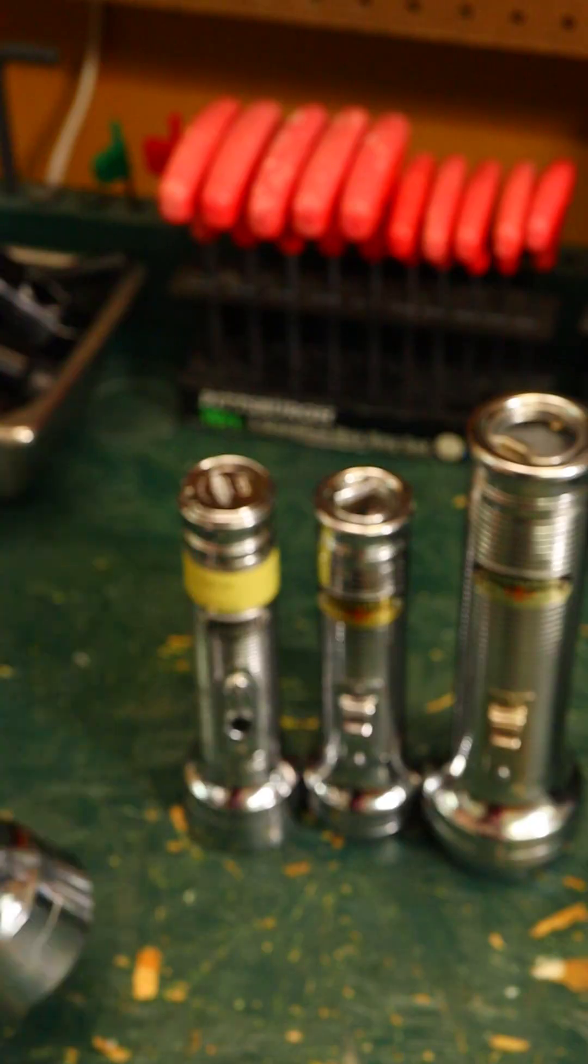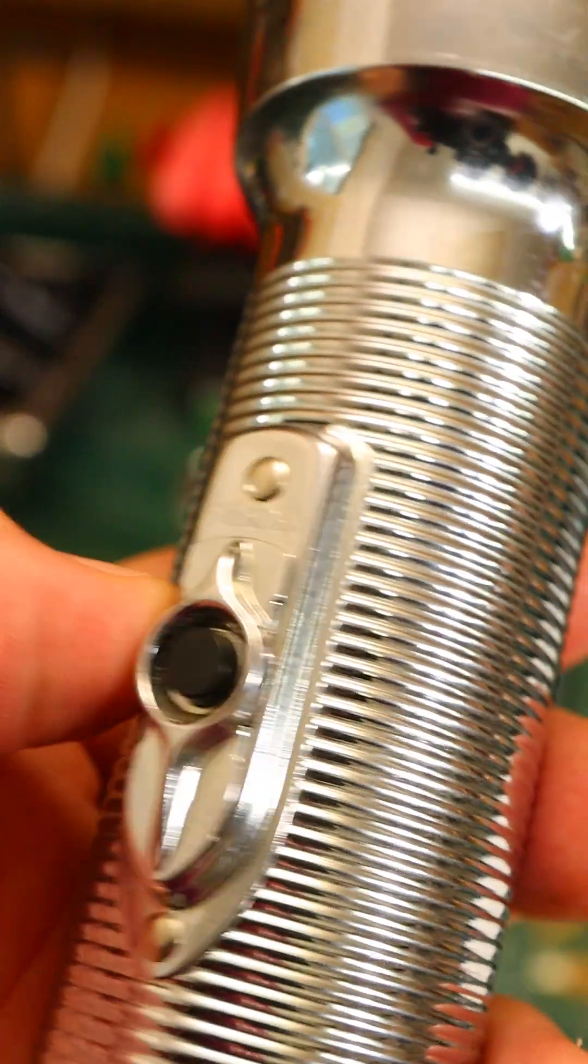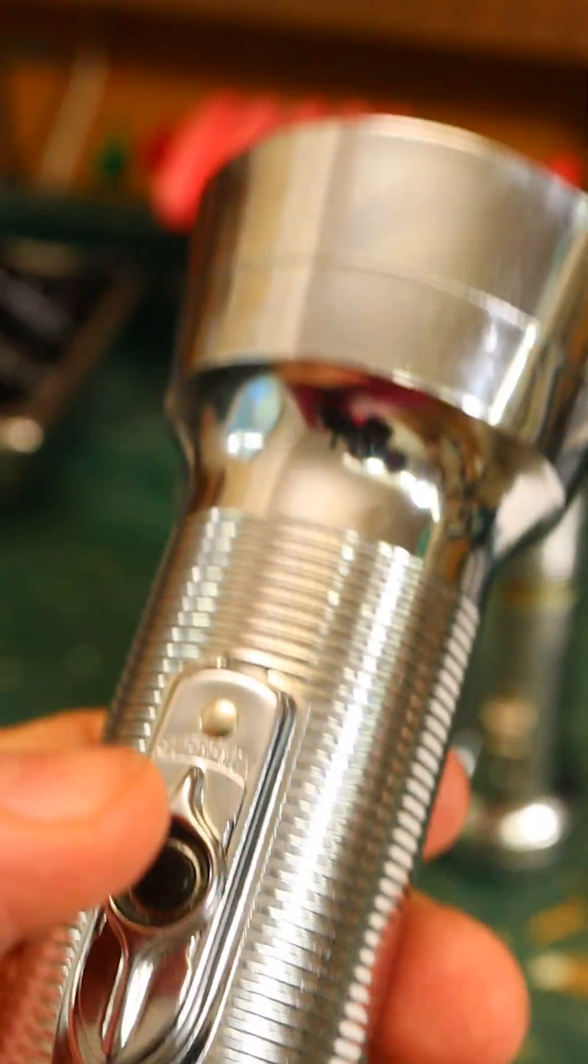The Eveready seem like they're well enough made for a stamped metal body, but I don't like the switches on these. The momentary button is in the middle of the switch and you have to press that down in order to be able to slide the switch forward into the on position.